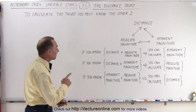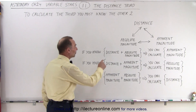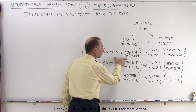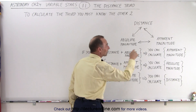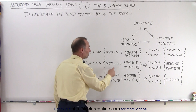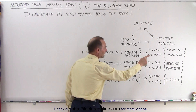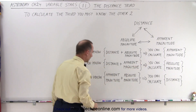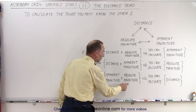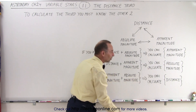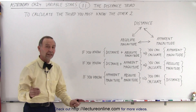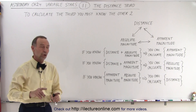If you know the distance and the absolute magnitude of an object, then you can calculate the apparent magnitude. If you know the distance and the apparent magnitude, you can calculate the absolute magnitude. And if you know the apparent magnitude and the absolute magnitude, you can calculate the distance. There's no way you can get the third item unless you know the other two.